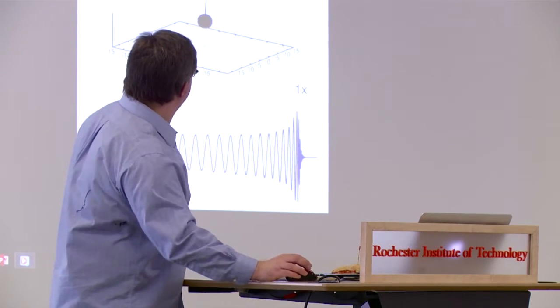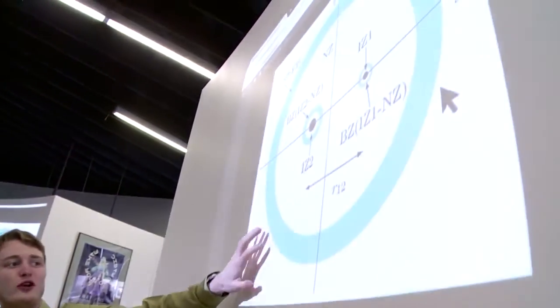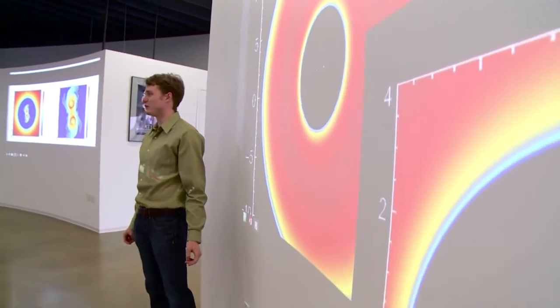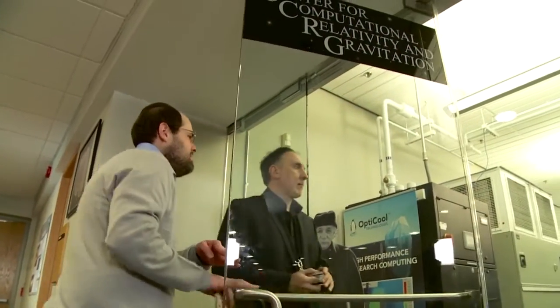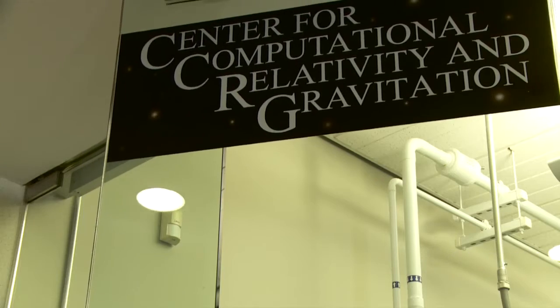General relativity has transformed the way physicists work even on a day-to-day basis, changing the tools that we use to understand and describe the natural world. And of course it's a fabulously successful theory of gravity. Among its most astonishing predictions is the existence of gravitational waves and black holes. This is the area our center here at Rochester Institute of Technology — the Center for Computational Relativity and Gravitation — is working on.